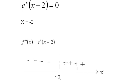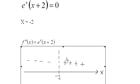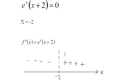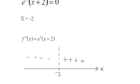Now if I put a large positive number, or a number greater than negative 2, obviously this will be positive and this is always positive. So I get a positive value. So I'm concave down here, and concave up on this side of negative 2.